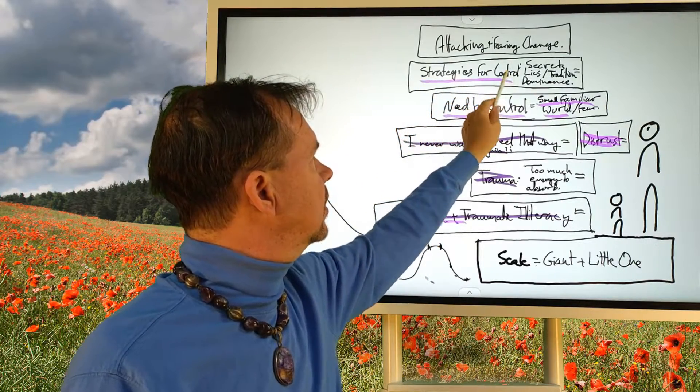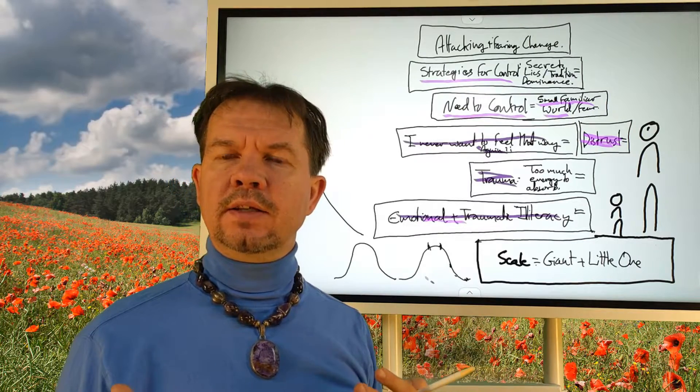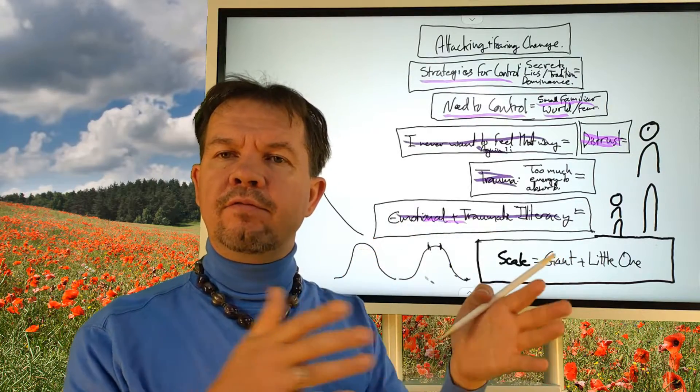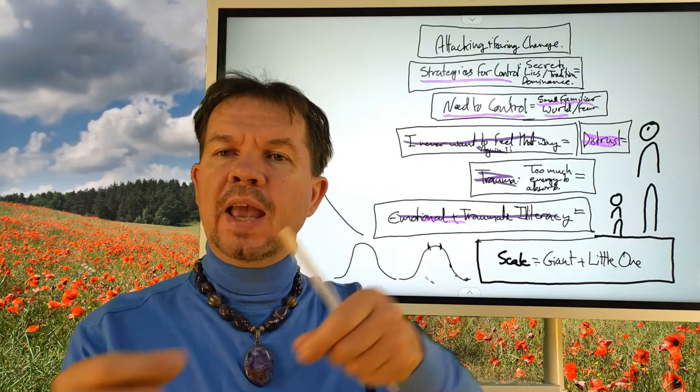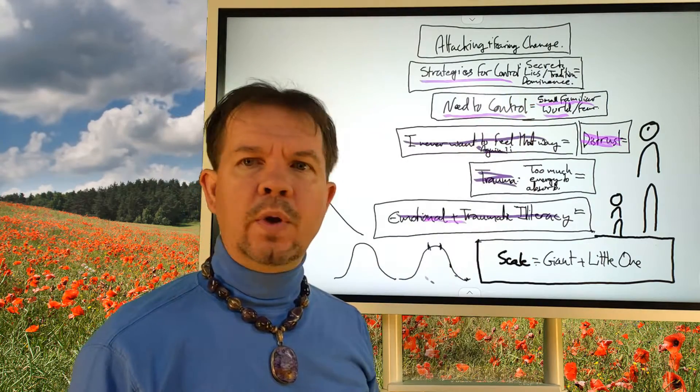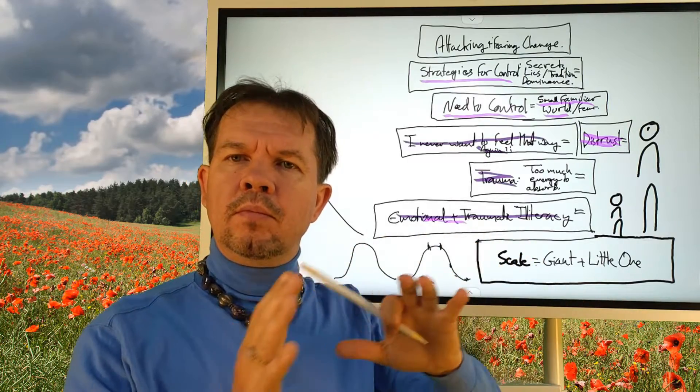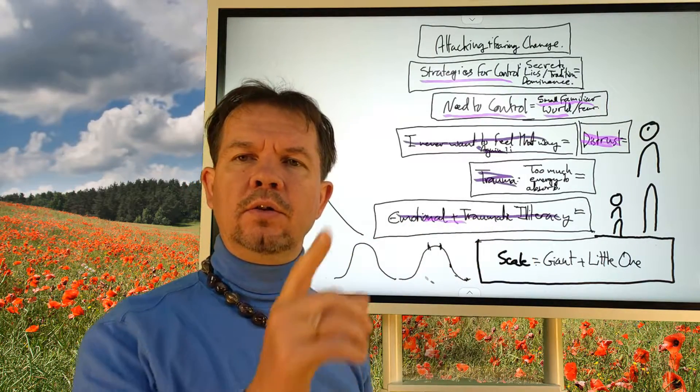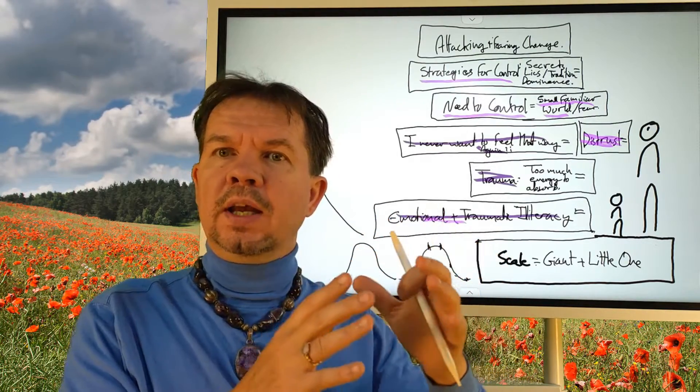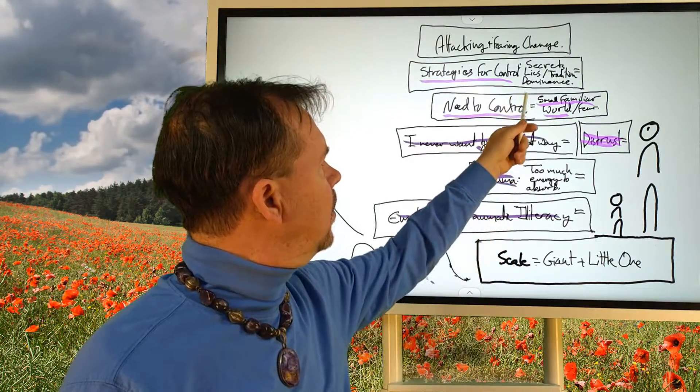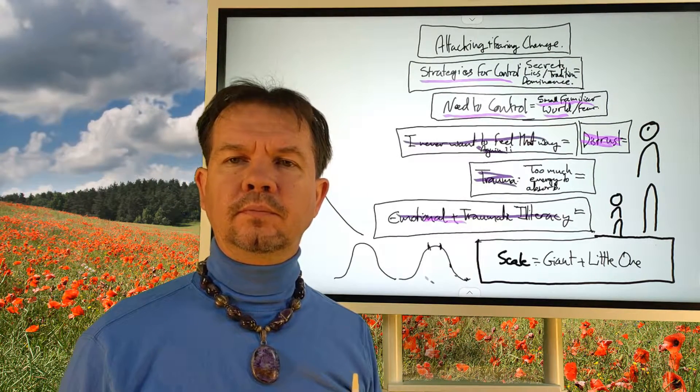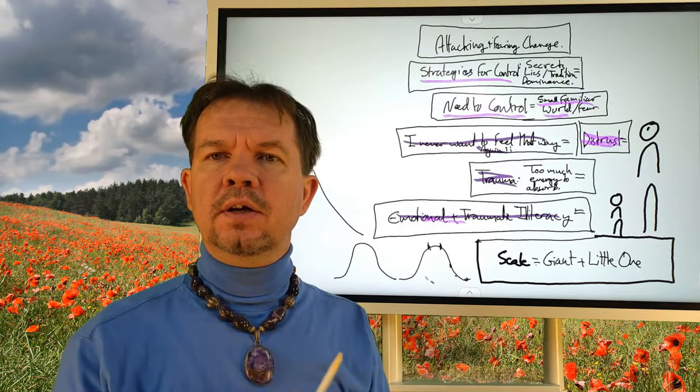Now, we also look at strategies for control. You can think of a secret as a strategy of control. If you don't know what's going on here, you cannot affect it. If you don't know where I've hidden my money, you can't take it. So it's fear of losing control. So we have secrets. We have lies as a more overt expression of secrets. I told you that I'm going to go over there today, but I'm really going over here. So you can't control me because I'm not there.